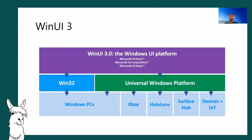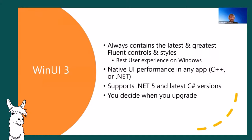Most importantly, WinUI 3 works everywhere — not through black magic like XAML Islands, but it literally just works on Win32 and UWP applications. WinUI 3 contains the latest Fluent controls and styles, the best user experience on Windows, and native UI performance in any application, whether C++ or .NET. You can be inside a container if you want, or your app can be a full Win32 app.